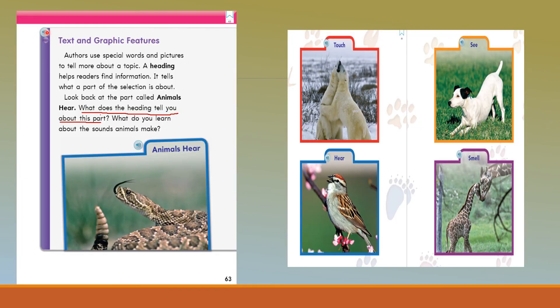Let's keep going with the story and talk about text and graphic features. Authors use special words and pictures to tell more about a topic. A heading helps readers find information — it tells what a part of the selection is about. These were the four headings: Touch — we see the polar bears touching each other; See — we can see what the dog is doing; Hear — the bird is singing; Smell — the giraffe is smelling its babies.